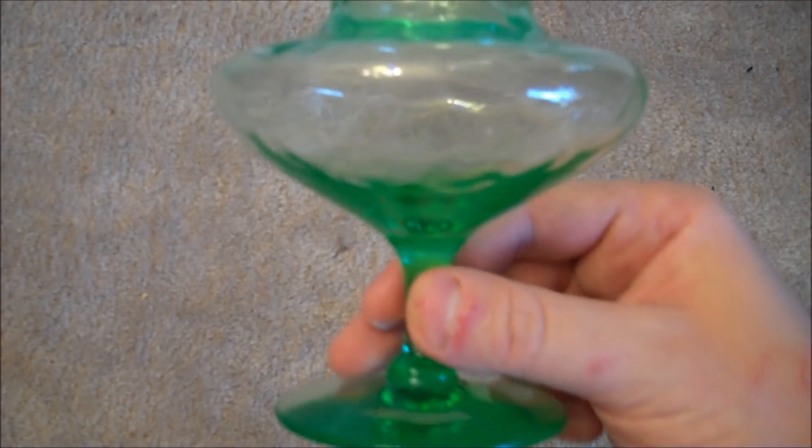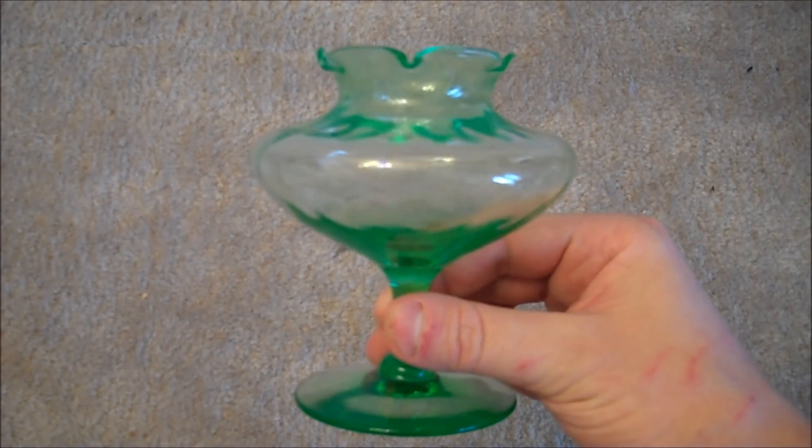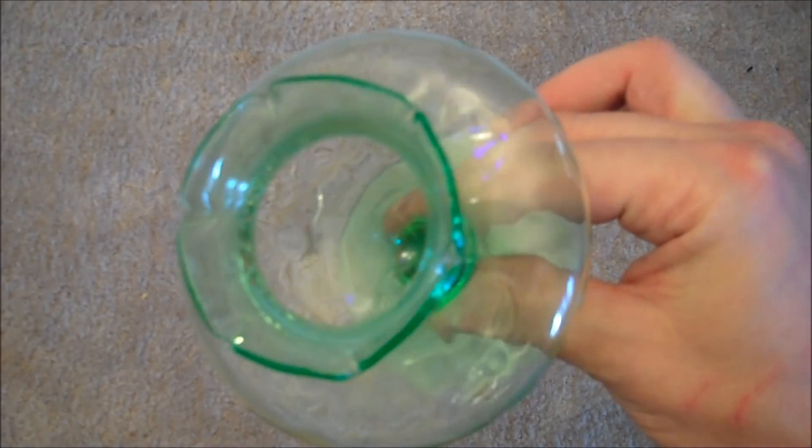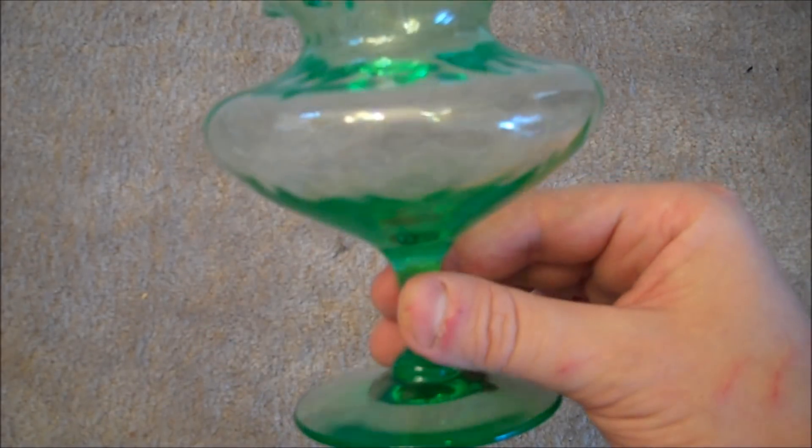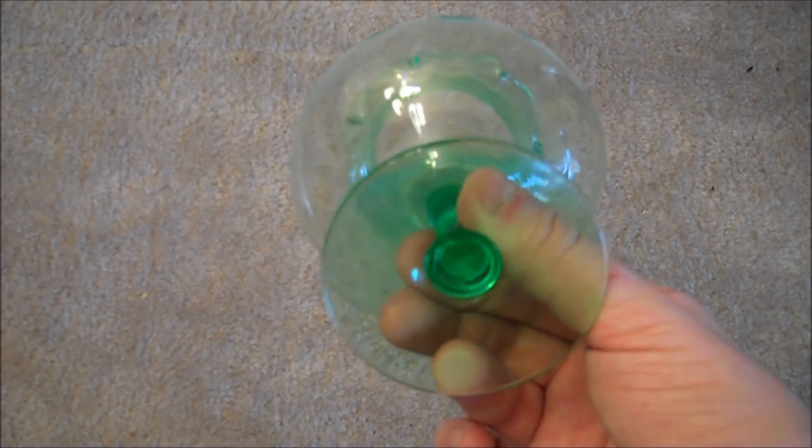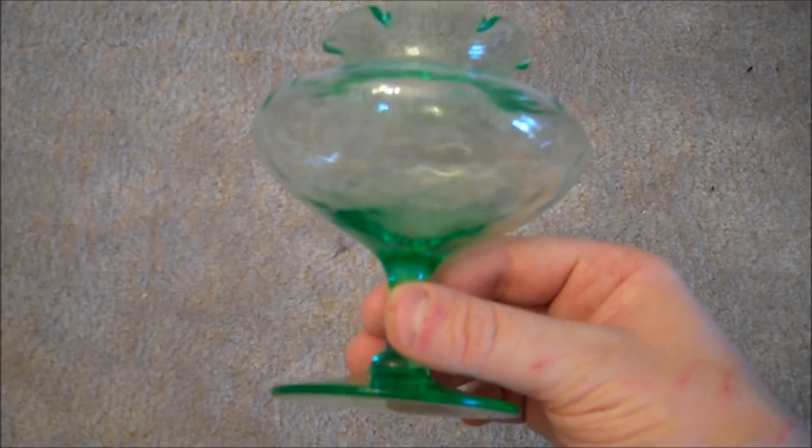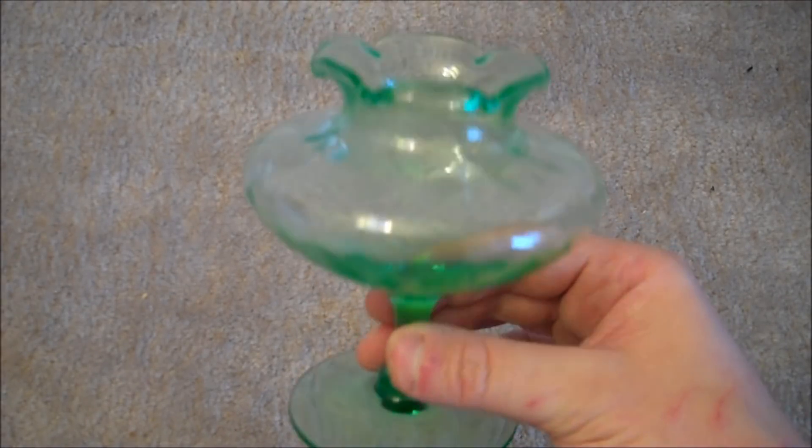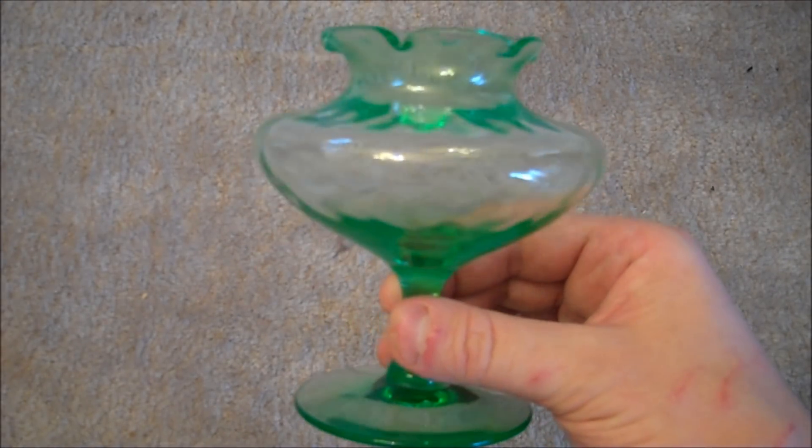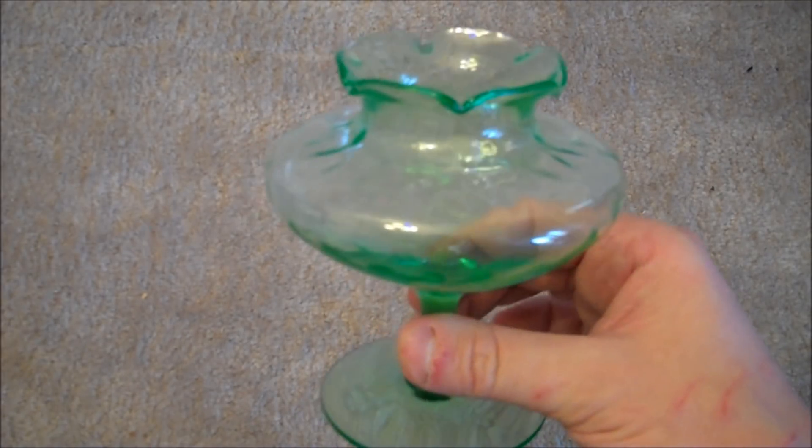As dangerous as uranium can be, it can also be very beautiful. For example, this piece of uranium glassware. Uranium has been used for thousands of years as a colorant. In its oxidized states, it can produce many different rich, vibrant colors, such as red, green, orange, yellow, and more.